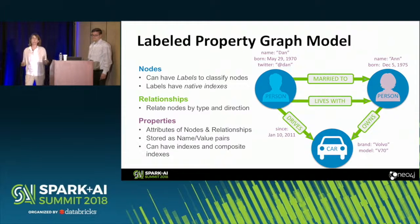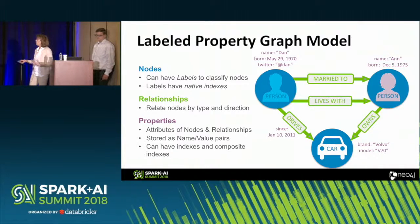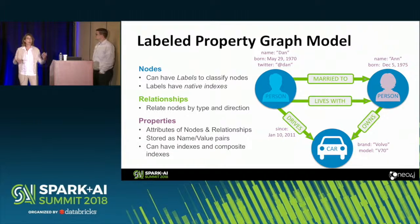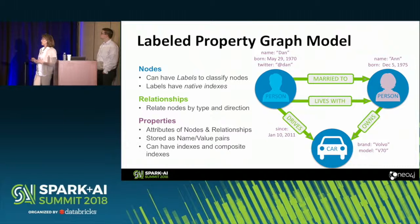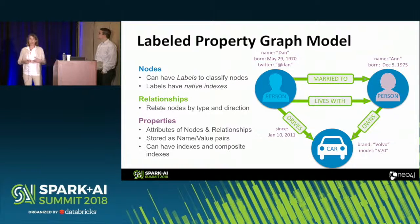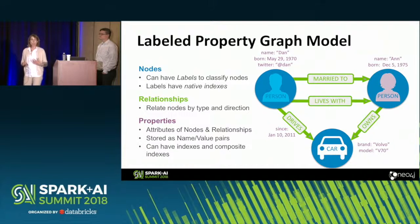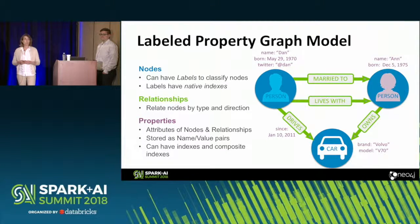We have properties on each one of those, and this is what makes it a property graph model. So you might have a person — what's their name? How tall are they? When were they born? When did they move somewhere? Where do they live? And for a car, what's the brand? What model was it made? This gives you attributes on both your nodes and your relationships, and you can store them together. You can have indexes as well. That's a high-level overview of a property graph.